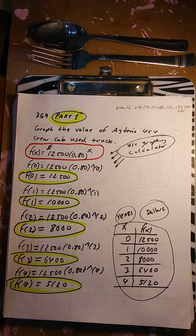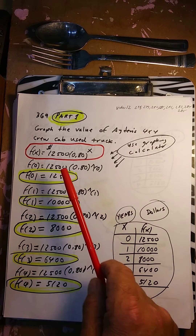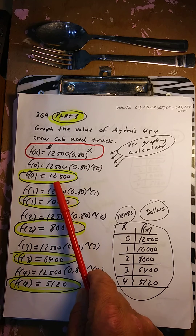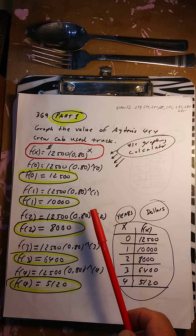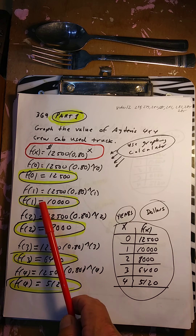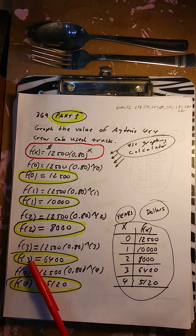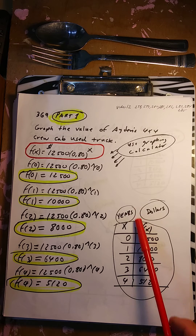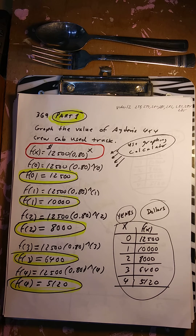Graph the value of an 8 is 4-by-4 crew cab used truck — it's worth $12,500 but it's going to depreciate. f(0) = $12,500 (initial value). One year later: $10,000. Two years later: $8,000. Three years later: $6,400. Four years later: $5,120. There's the table — years and dollars for this 4-by-4 crew cab used truck.